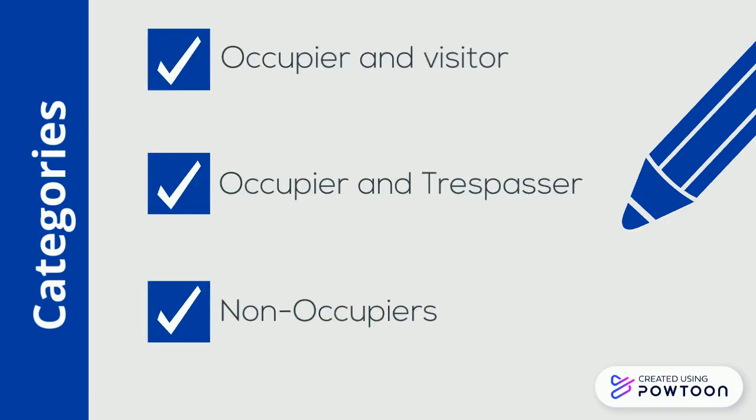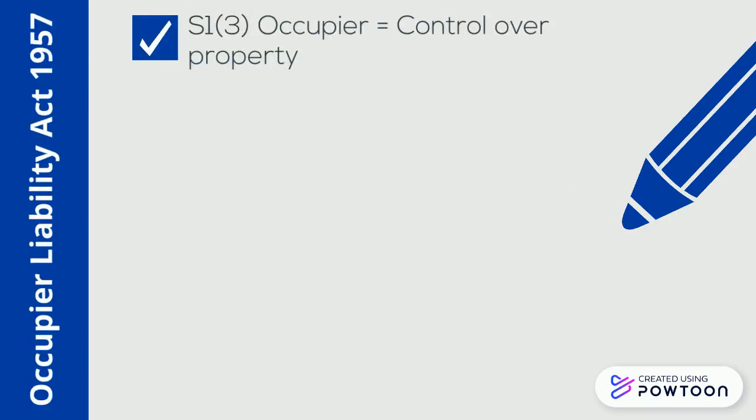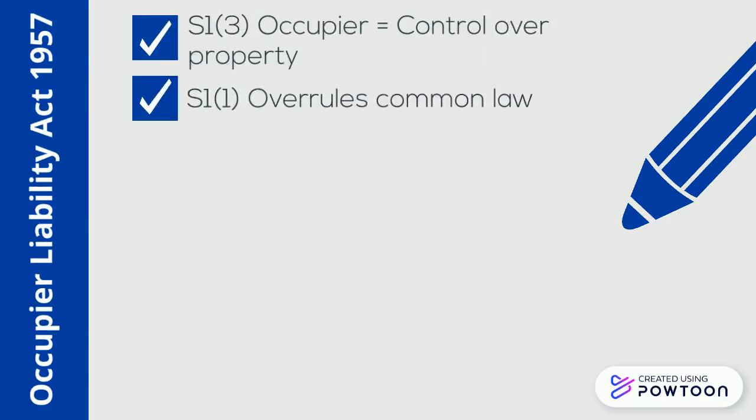First, turning to occupier's liability to visitors. The primary act governing this area is the Occupier's Liability Act 1957, which states that an occupier is a person with control over the property. The act overrules common law principles in the relevant areas.